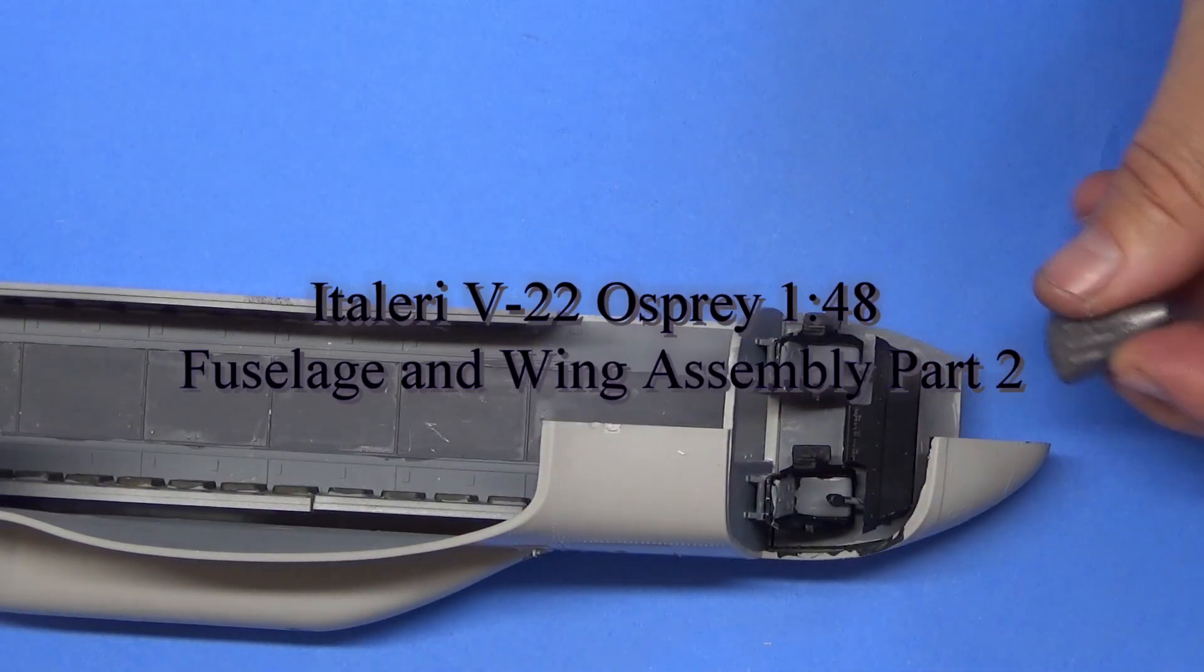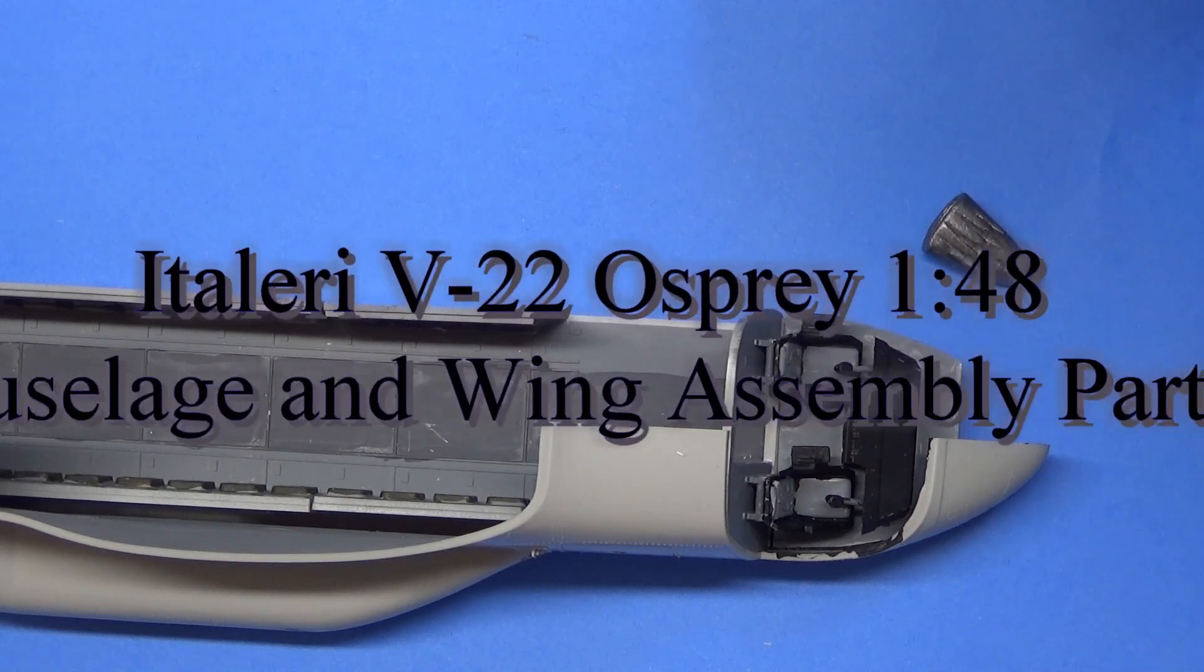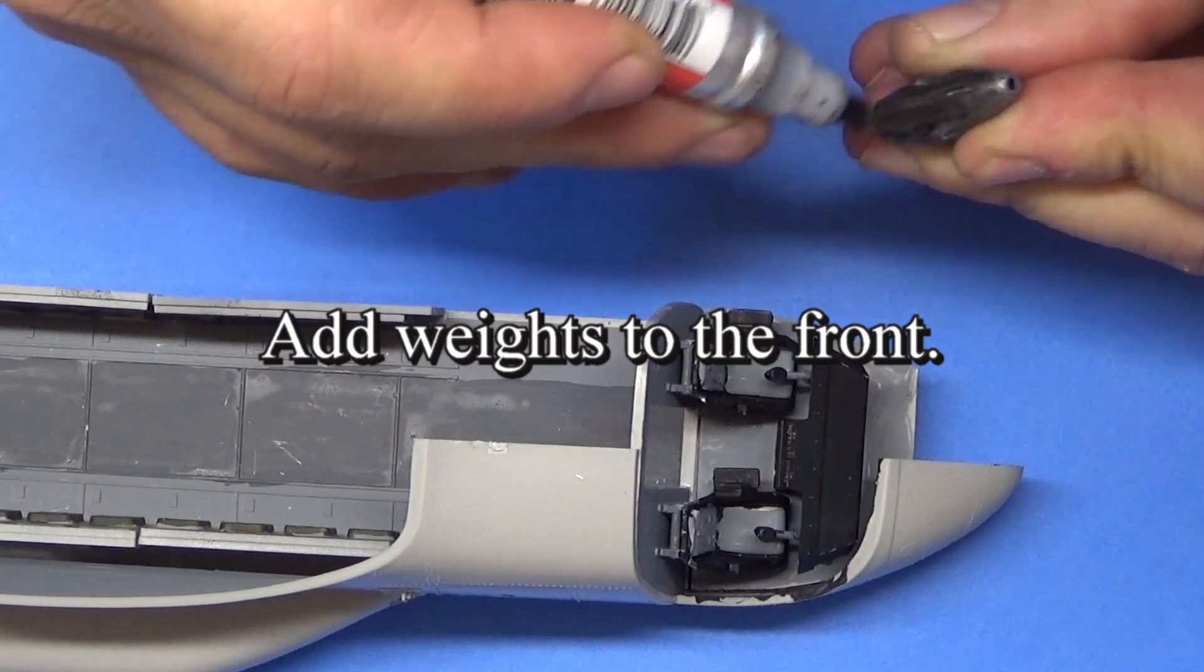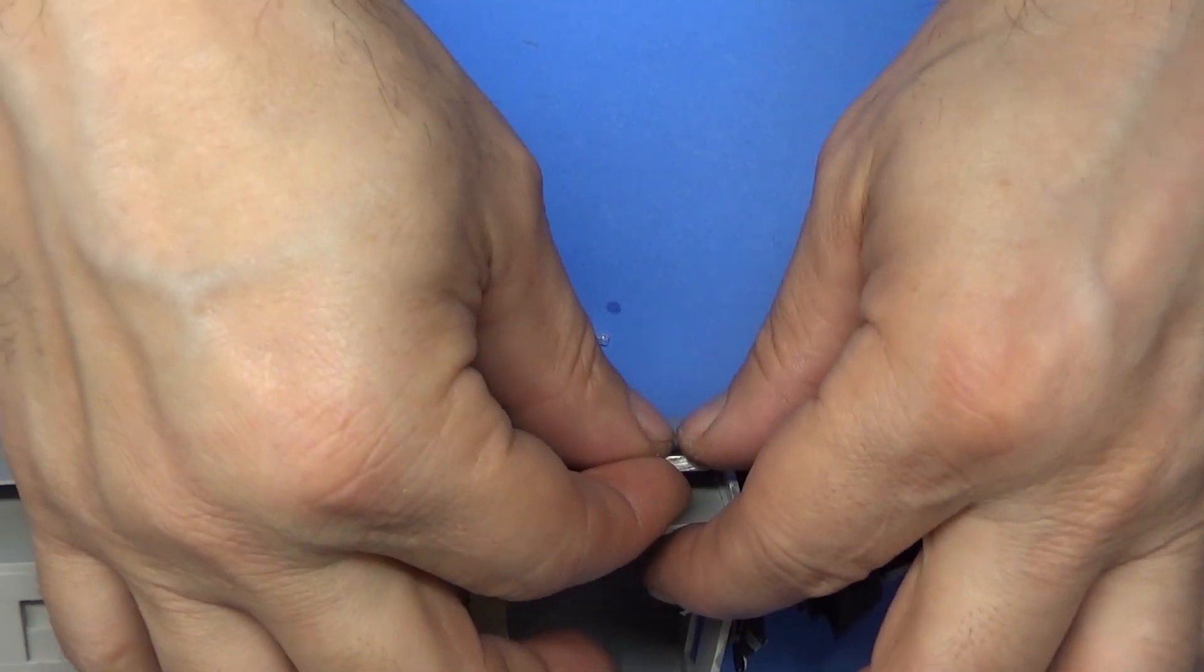Hello Plastic Model Builders, this is Ari Stone with Plastic Model Builder and this is part two of the V-22 Osprey 1/48 scale. In this video we're going to be assembling the rest of the fuselage and putting the wings and the flaps together.